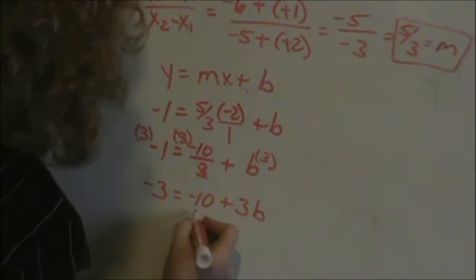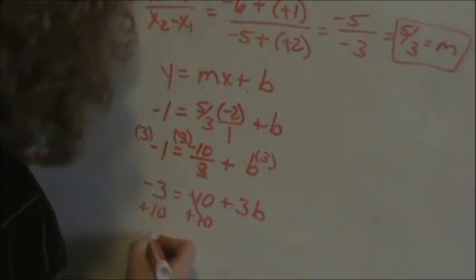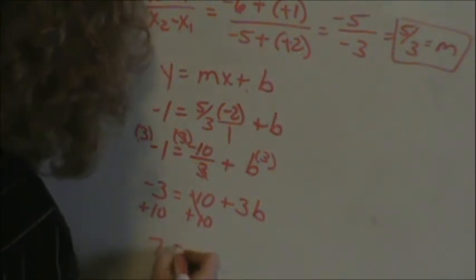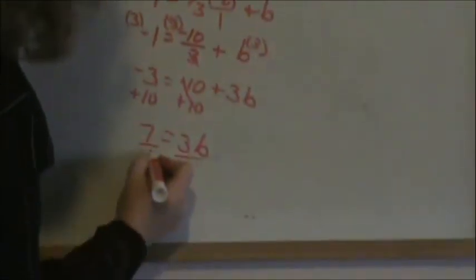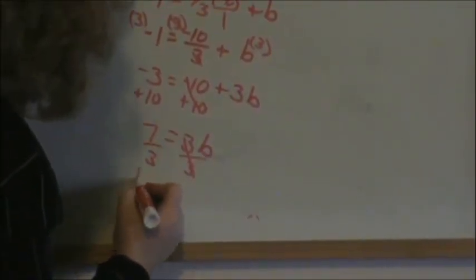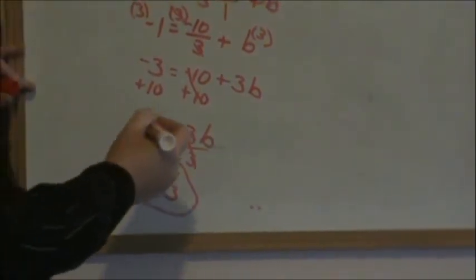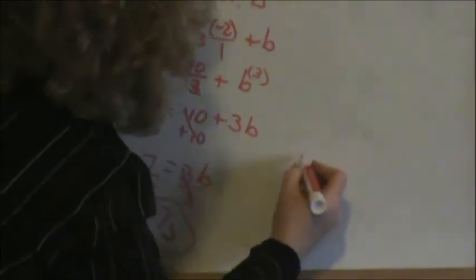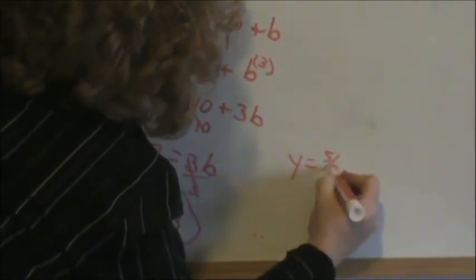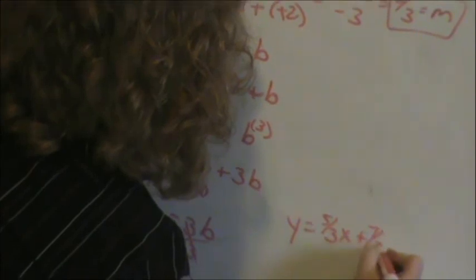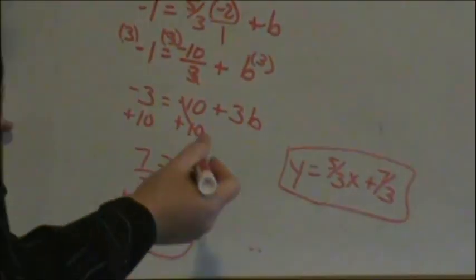Algebra. Add your 10 to the other side. That becomes a positive 10. Adding a negative 3 is a positive 7, 3b. Now divide over your 3 to get rid of that. And b equals 7 thirds. Now we know our y intercept and our slope. So we can write the equation of our line. y equals 5 thirds was our slope, x plus 7 thirds. And that is the equation of that line with those two points.